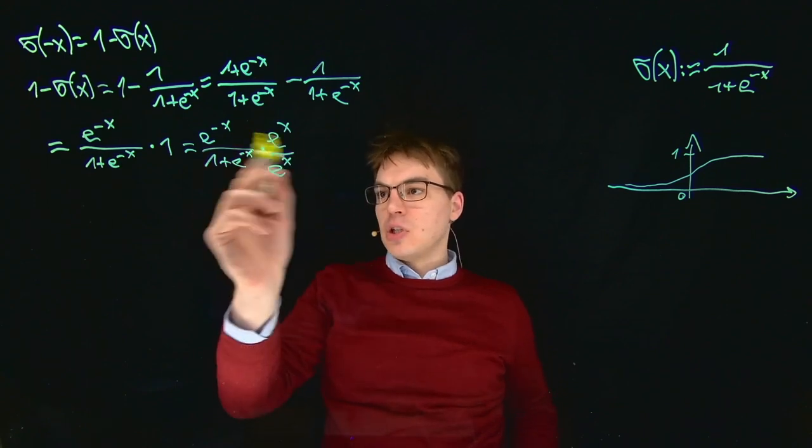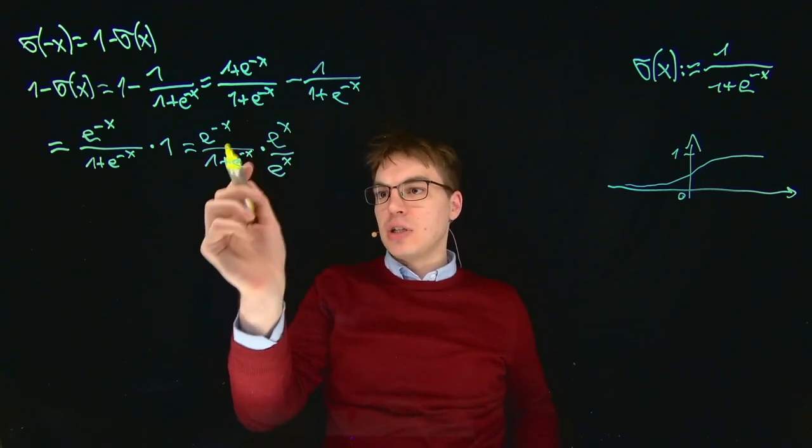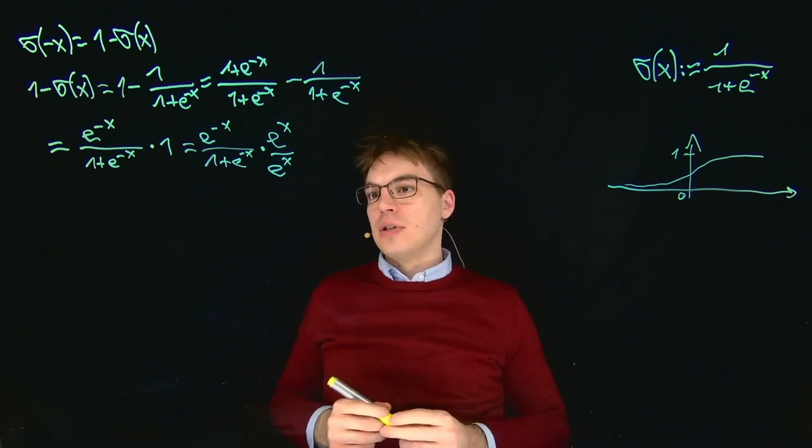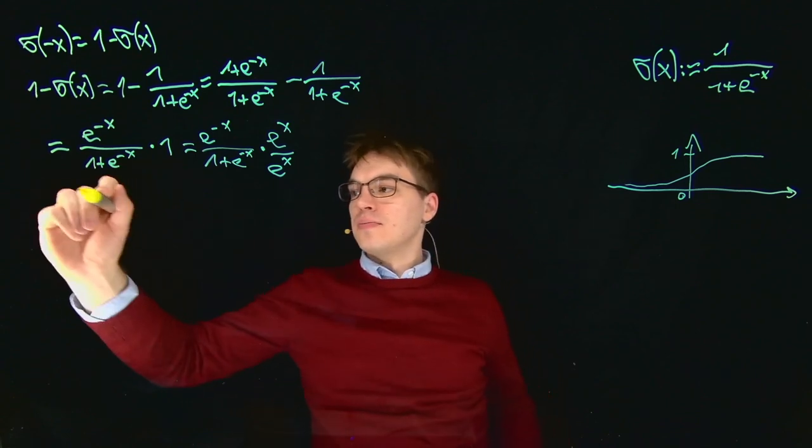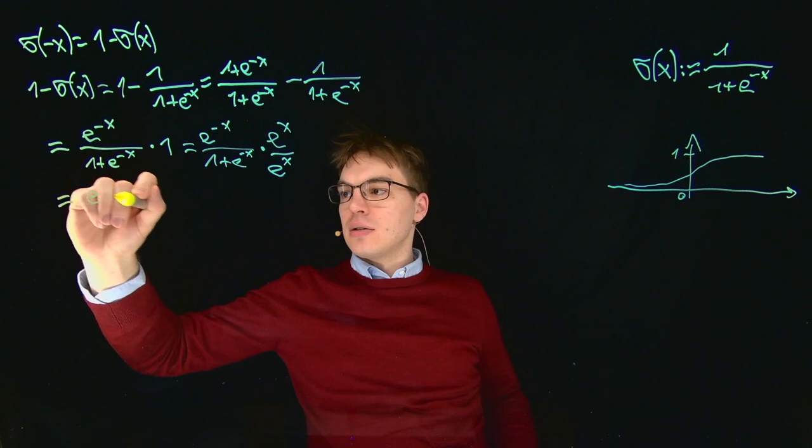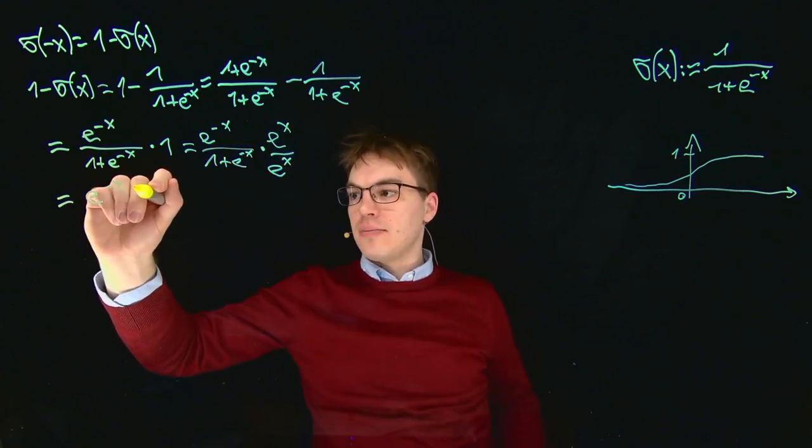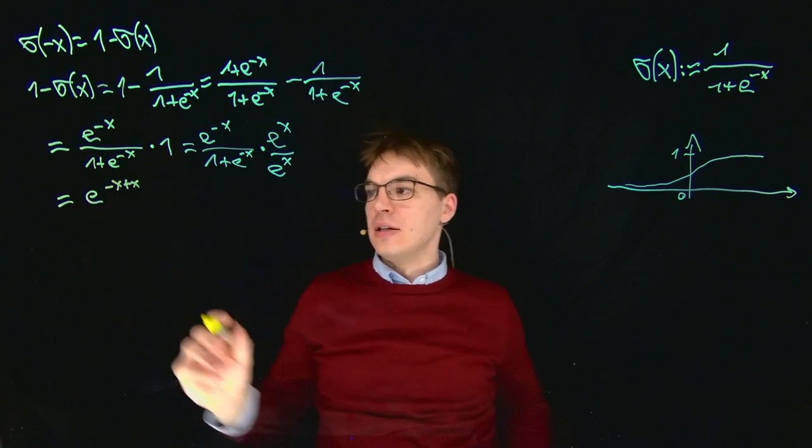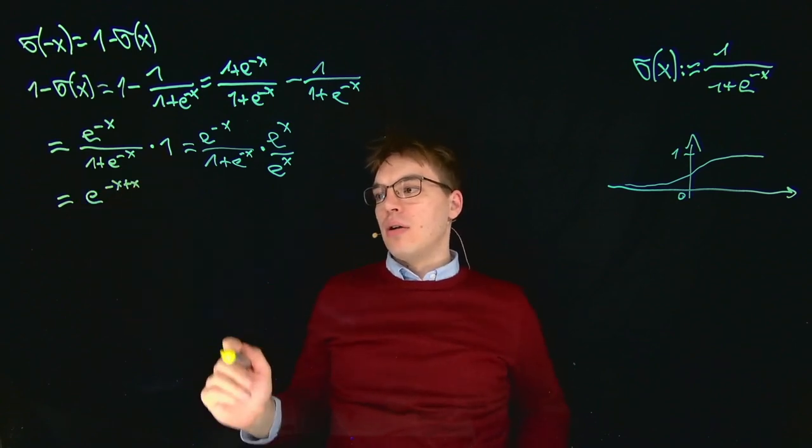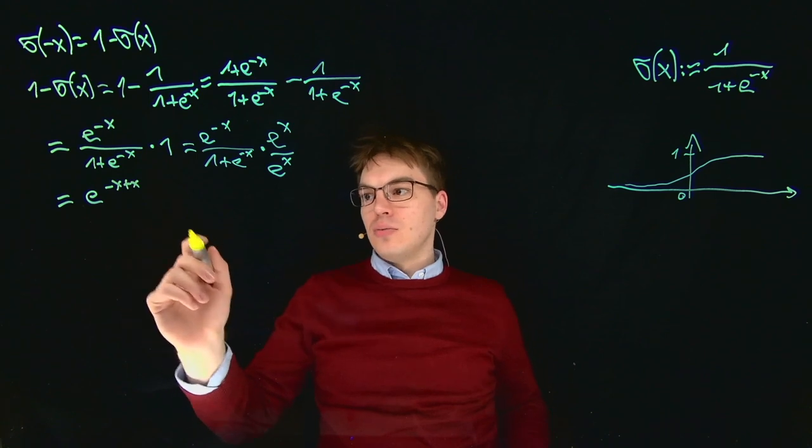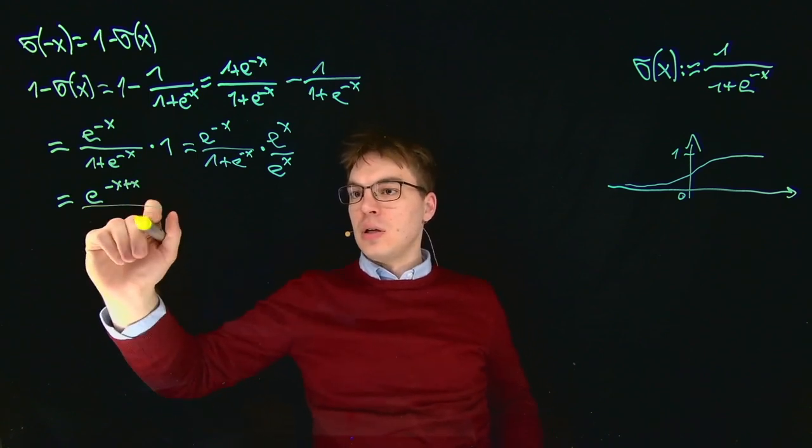Multiplying works just by multiplying the different parts of our fraction, so we get e to the power of minus X times e to the power of X, so this is e to the power of minus X plus X, and this is e to the power of zero, which is one.